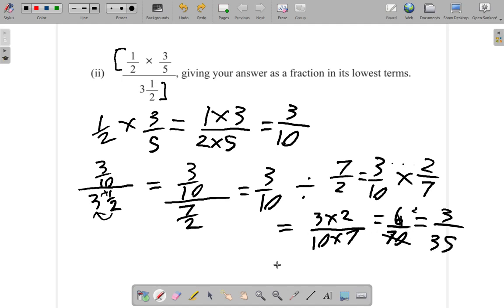Now, I could also have simplified from here. I could go back here and say, three times two over ten times seven. Two into two is one, two into ten is five. So you have three over thirty-five. So that could have been done at this point.